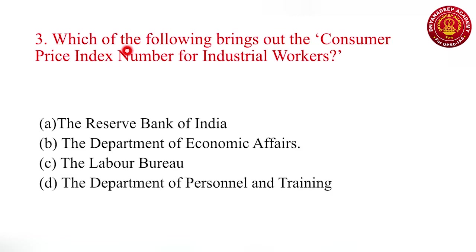Question number three: which of the following brings out the consumer price index number for industrial workers? This is a very straightforward question. Option one: Reserve Bank of India. Option two: Department of Economic Affairs. Option three: Labor Bureau. Option four: DIPT, which stands for Department of Personnel and Training.